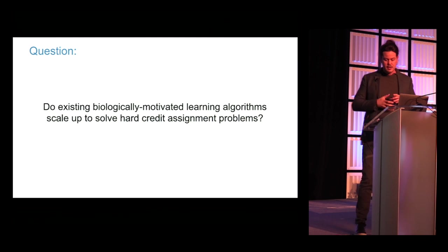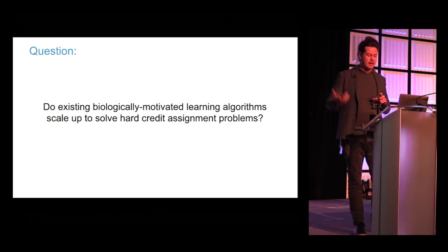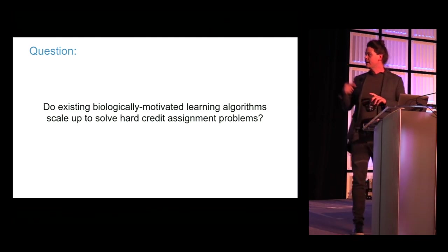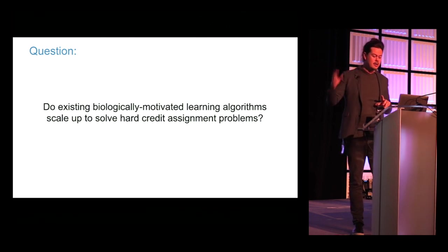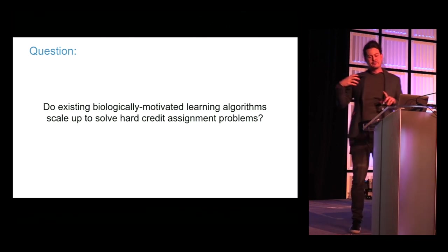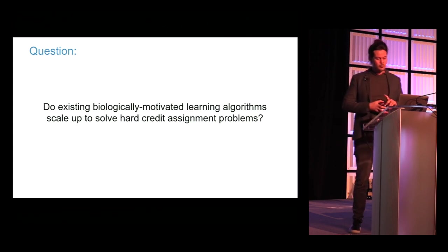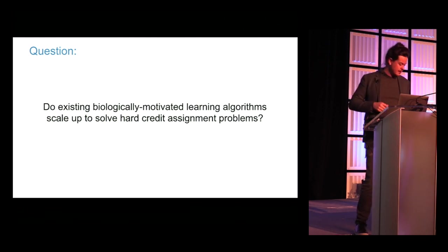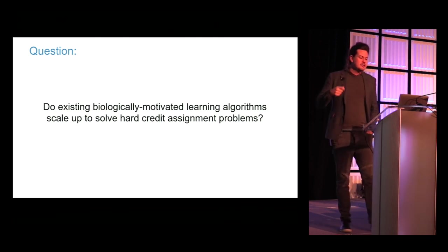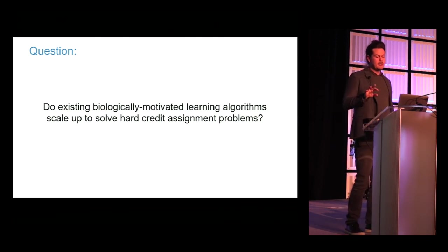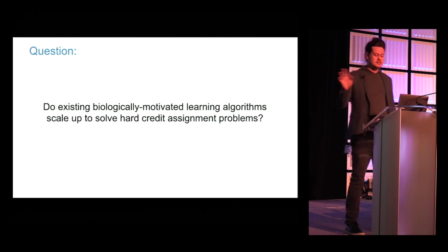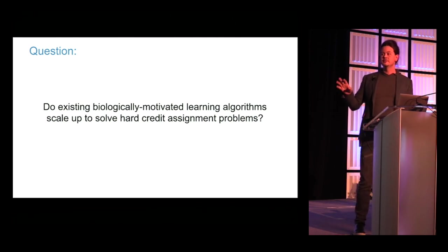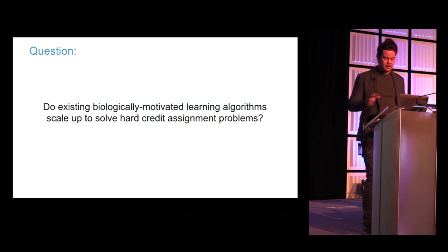I've been interested for a long time in the idea that Backprop might have something to tell us about the brain. Recently, because of what has happened with deep networks, people have gotten re-interested in whether deep learning algorithms like Backprop might tell us anything about the brain. The question naturally arises: do any of the existing biologically motivated algorithms scale up to solve the sort of problems that have convinced us that Backprop is useful?